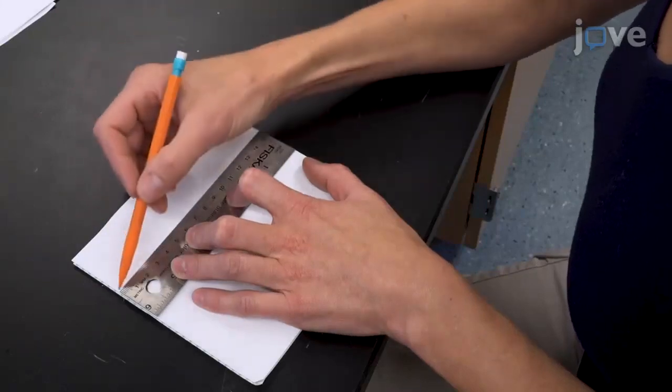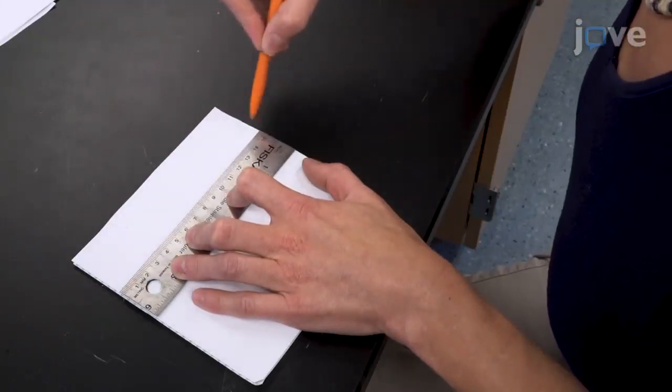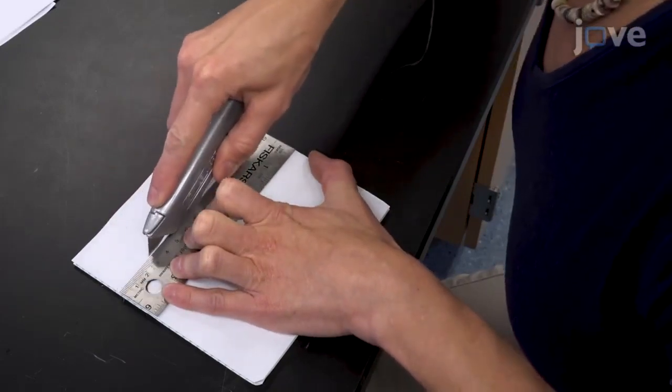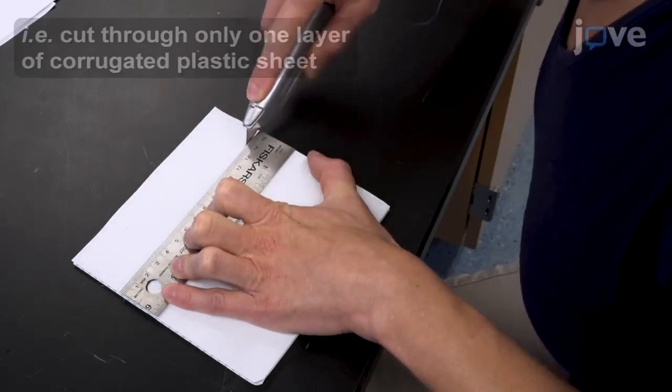For the top layer of the small radiation shield, use a pencil to draw a line 4 cm from one edge of the 15 cm square, and use a straight edge as a guide to score along the line.